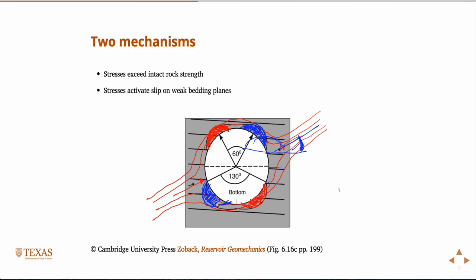So when you have an anisotropic rock, you can get these sort of characteristic breakouts.